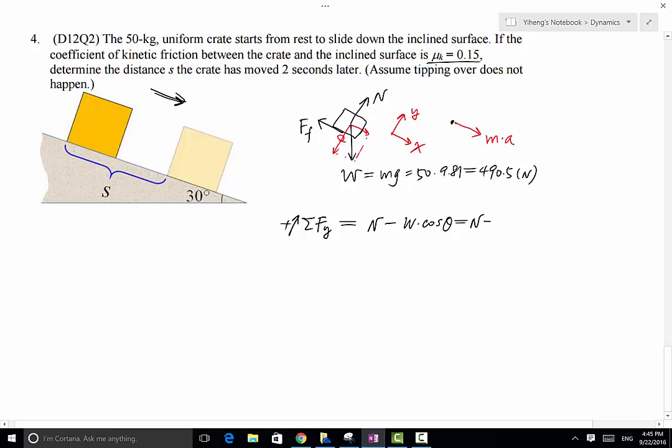This equals to normal force minus 490.5 times cosine 30 degrees. Along the y direction, this equals to zero, there's no movement along the y direction. From here, we can solve for the normal force. Normal force equals 424.8 newton.